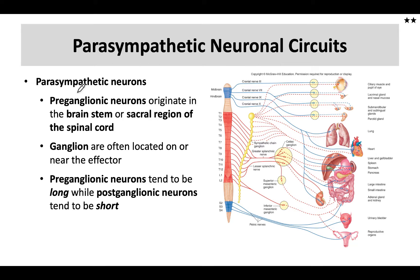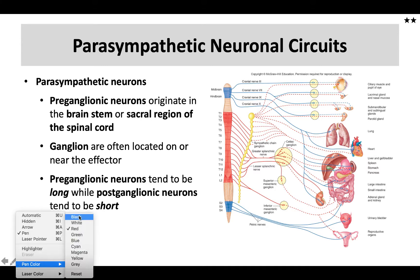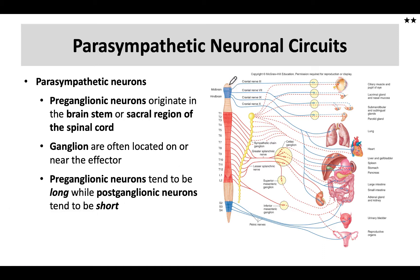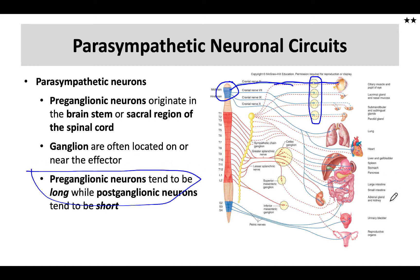The parasympathetic nervous system is located in either the brainstem — the midbrain and hindbrain — with some cranial nerves being involved, or down in the S2, S3, and S4 sacral segments. The parasympathetic nervous system has a long preganglionic neuron, and the ganglia are found very close to the actual target organ or structure, resulting in a short postganglionic neuron.